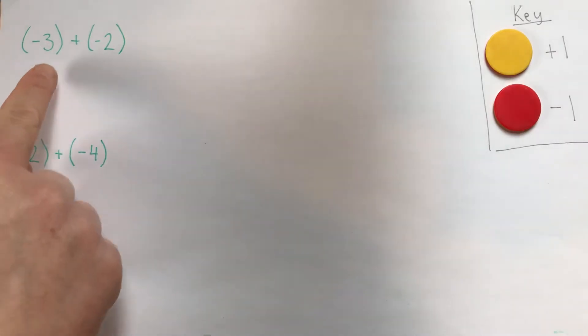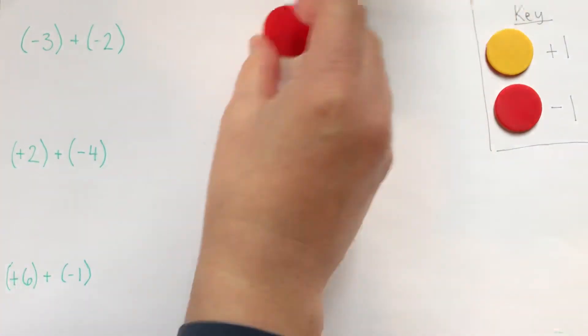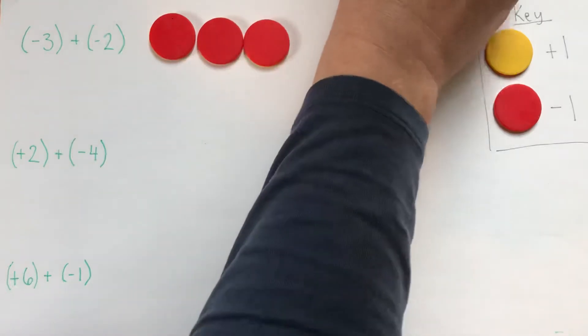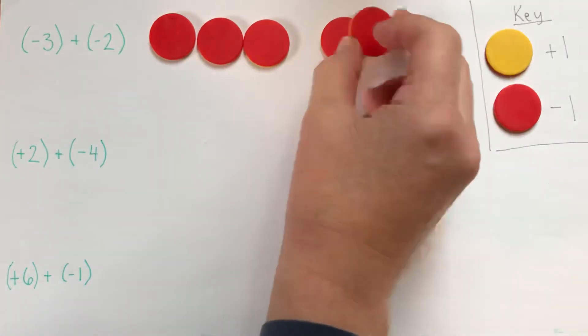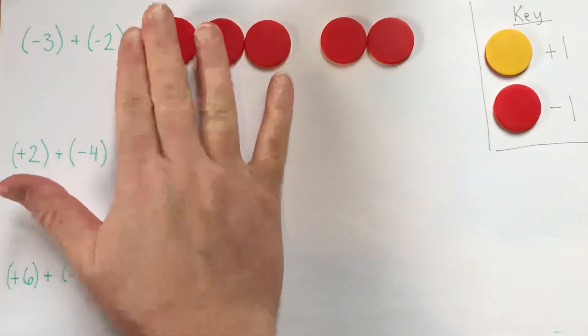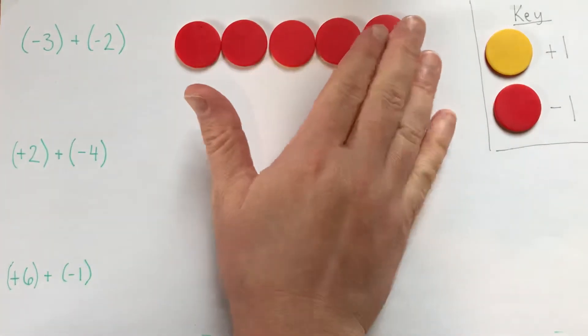Let's look at the first one: negative three. I'll put three negatives. So there's negative three plus negative two. You don't need to write a plus sign or anything, you can just show negative three plus negative two.